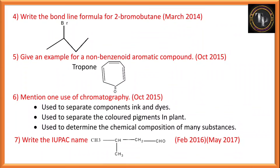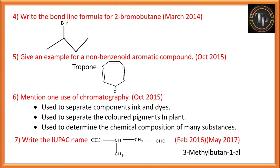Write the IUPAC name of the given compound. On the right hand side you have a CHO aldehyde group, so we start numbering from that end: one, two, three, four. Third position has a methyl group. So it is 3-methylbutane-1-al. The name is 3-methylbutane-1-al because the first position is the aldehyde, the parent carbon chain contains 4 carbons (butane), and there is a methyl group at the third position.